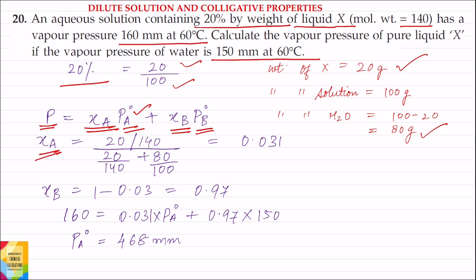The mole fraction of liquid X equals moles of liquid X, which is weight 20 divided by molecular weight of X (which is 140), divided by total number of moles. Total moles equals moles of liquid X plus moles of water, where moles of water equals weight of water (80) divided by molecular weight of water (18).